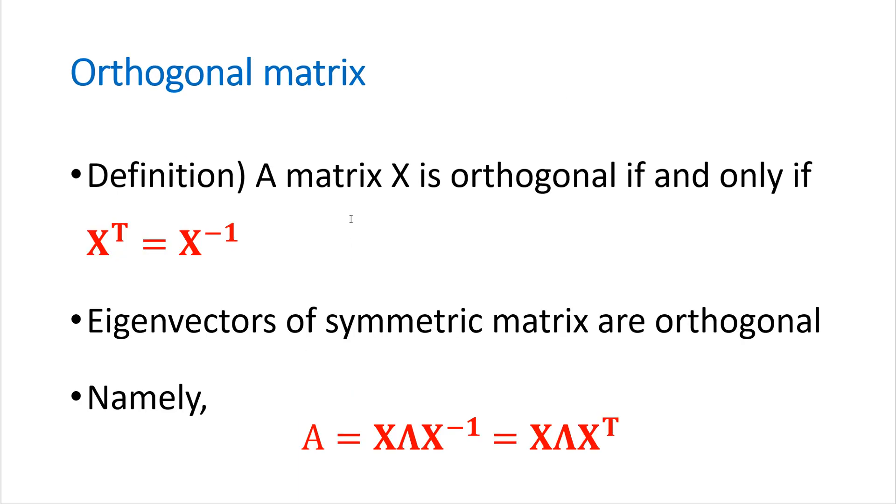Let's think of orthogonal matrix. So definition of orthogonal matrix is like that. If x matrix is orthogonal if and only if transpose x equals to inverse of x. So it satisfies this condition. So eigenvectors of symmetric matrix are orthogonal like this form.